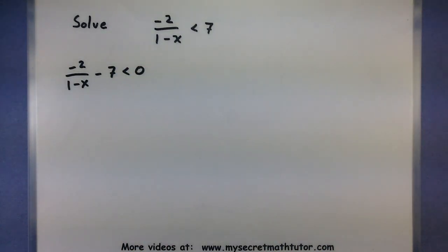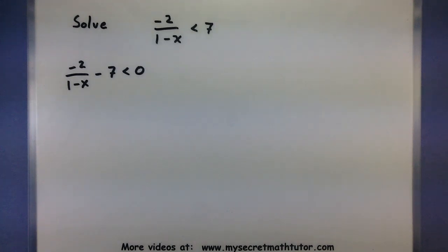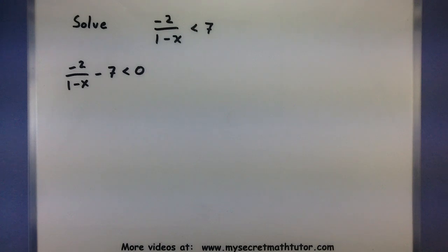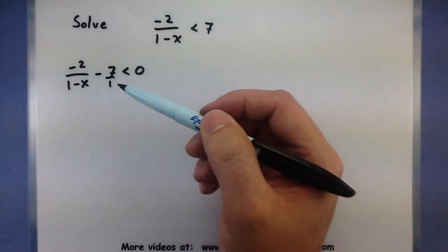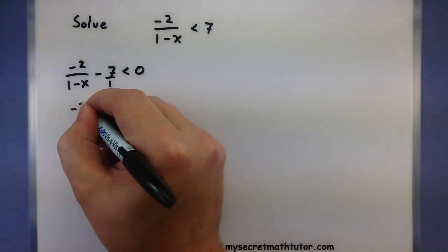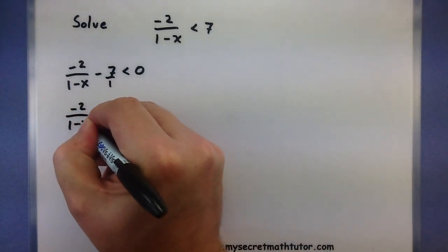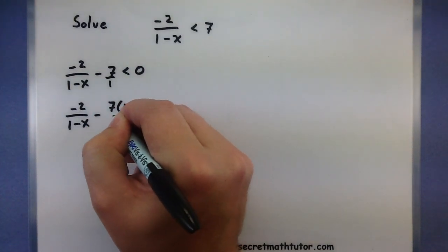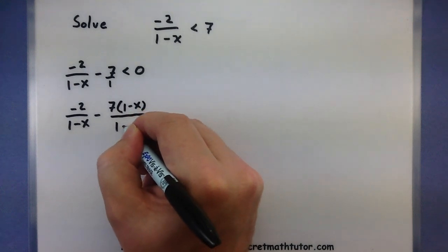That means all I need to know is whether this entire expression is either positive or negative. Now that everything's on one side, we need to combine it into a single fraction. That often involves finding a common denominator. We'll imagine the 7 is over 1 and multiply the top and bottom by (1 minus x), so this one doesn't change minus this one multiplied by (1 minus x) on top and (1 minus x) on the bottom.